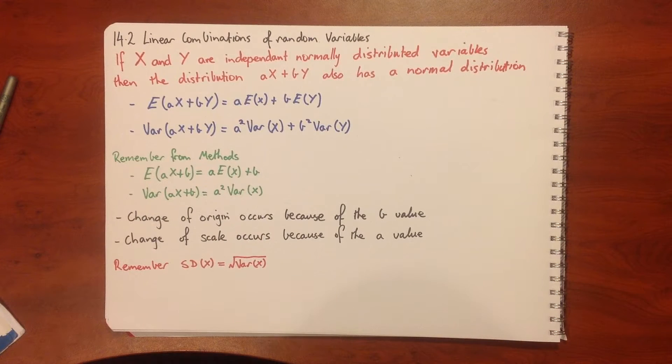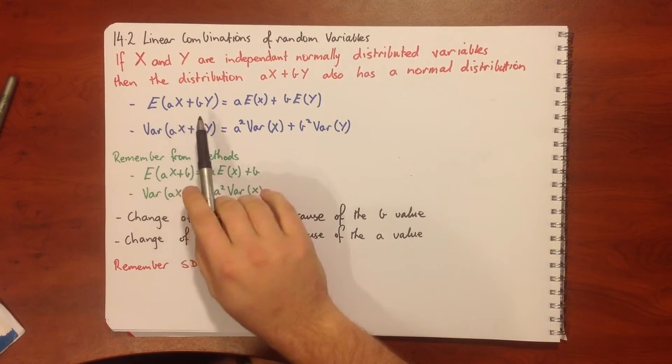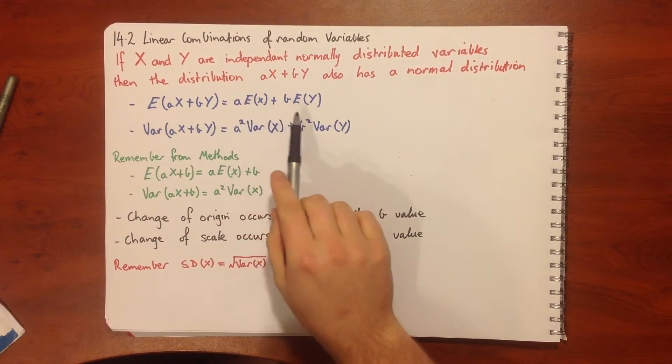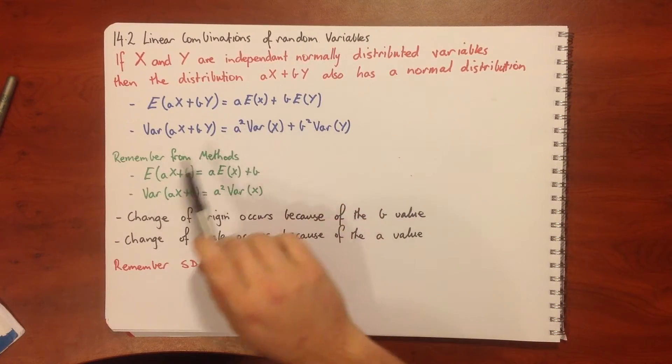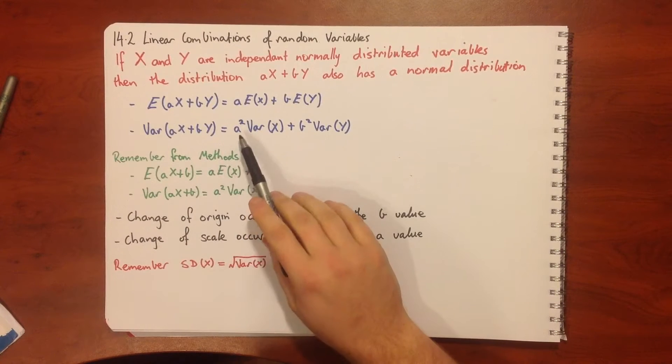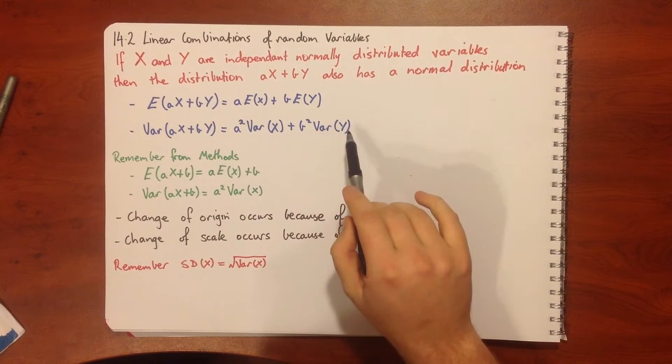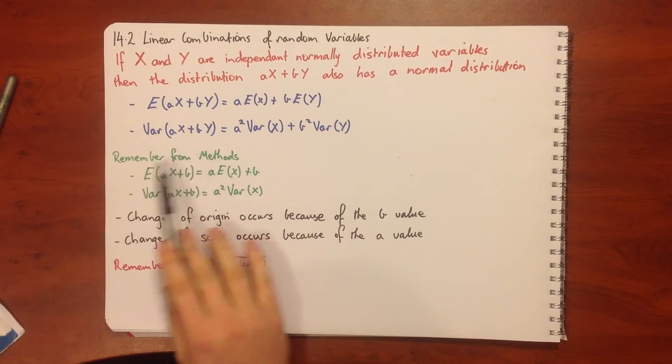Our expected value of ax plus by is equal to a times E of x plus b times E of y. Similarly, the variance of ax plus by is equal to a squared the variance of x plus b squared the variance of y.